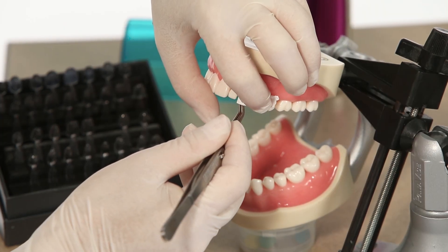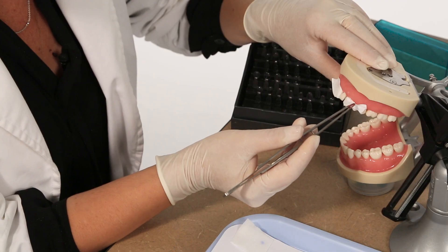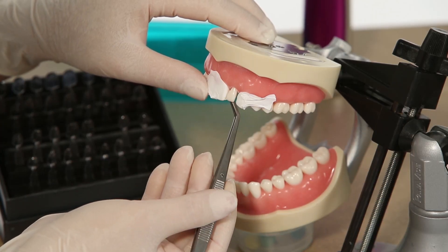Place an interproximal separator such as Mylar strips, Toffelmeyer, or Teflon tape to isolate the tooth for the procedure.